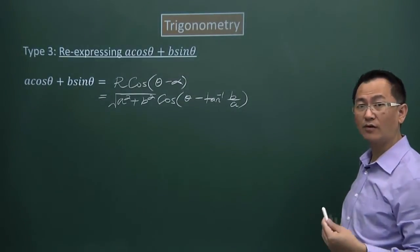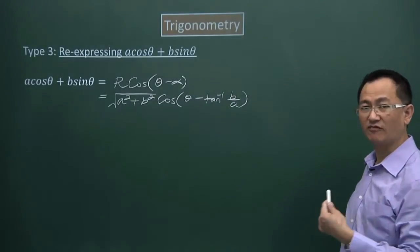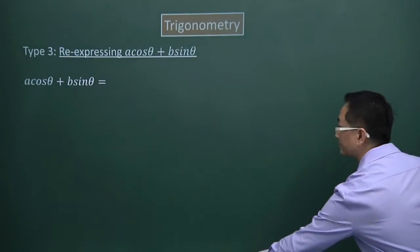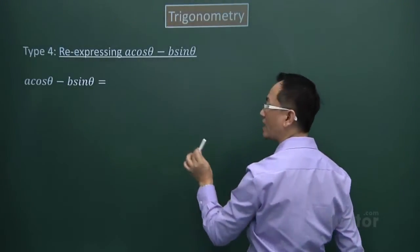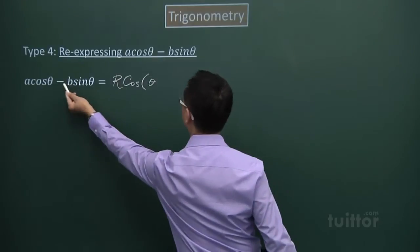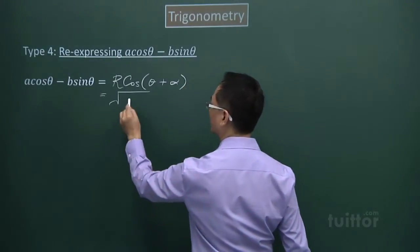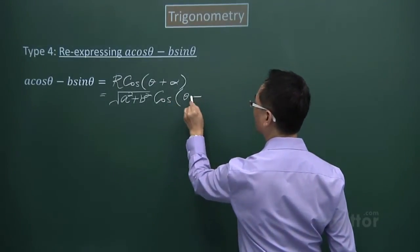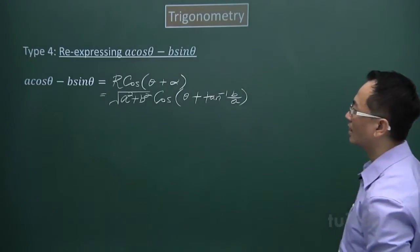And the last one, you can see the cosθ come first, followed by negative, then sinθ. The general form we want to take is R cos(θ + α). R is replaced by a positive root of A² + B², followed by cos(θ + tan⁻¹(B/A)).